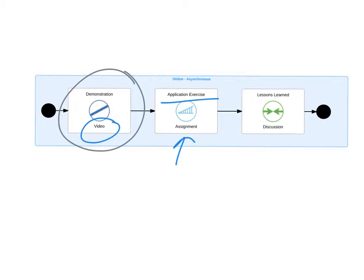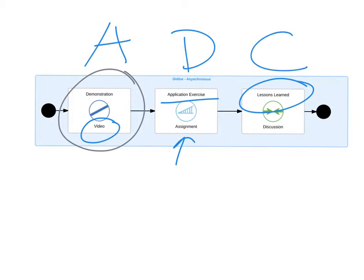The application exercise could be a problem set, like in a math course, or some other practice activity. Once the learner completes it, they connect to their prior learning through a lessons-learned discussion in an online environment. This gives us a simple Absorb-Do-Connect sequence moving through this model.